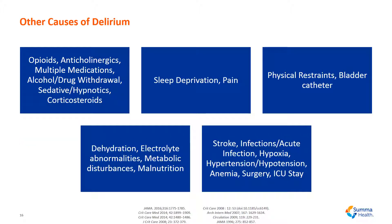This slide lists all other causes of delirium. You'll notice there are several medication-related causes including opioids, anticholinergics, alcohol or drug withdrawal, etc. The patient can also be sleep deprived or have pain, be in physical restraints, or have a bladder catheter. They may also be dehydrated, have electrolyte abnormalities, or have hypoglycemia, for example. Stroke, hypoxia, hypertension or hypotension, and ICU state will also predispose a patient to delirium.